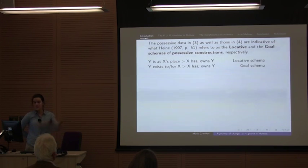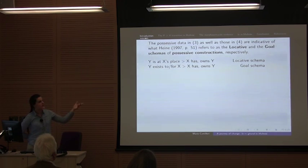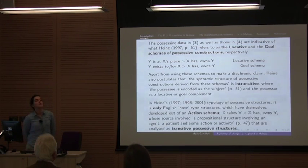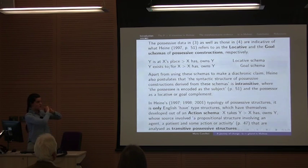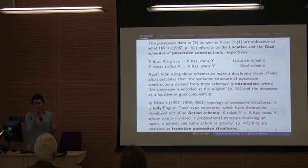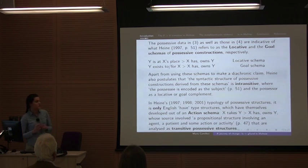This is the schema: the locative one is 'Y is at X's place', such that that locative construction yields possessive interpretations such that X has or owns Y. Similarly, the goal schema involves 'to X' as opposed to 'X's place', which also yields a possessive reading. However, Heine's account is not simply diachronic. Through such an organization of locatives into a locative schema becoming a possessive construction, he also makes a clear statement about the syntax of such constructions: possessive structures derived out of locative and goal schemas are intransitive in nature, with the possessor encoded as subject and the possessive treated as a locative or goal complement.